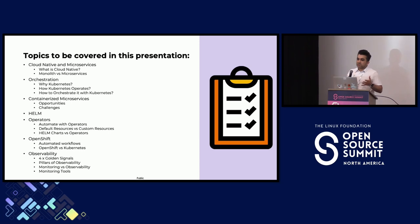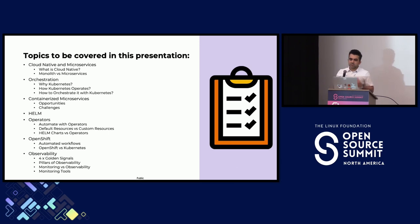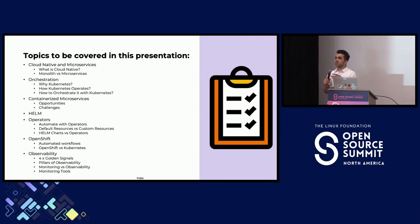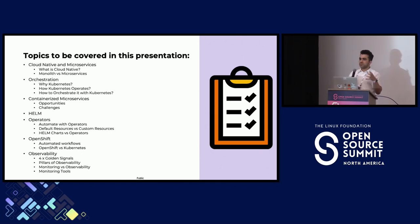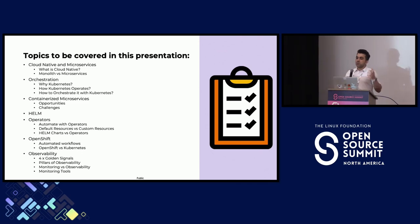First, we're going to start with cloud-native and microservices. Then we go into the orchestration phase, a little bit on containerized microservices and what challenges we're going to face. A little bit on Helm. Operators are going to be next — I'll offer operators as an alternative to Helm charts and how that helps engineers become more innovative and use their time to code and be creative rather than just focus on putting configurations into their clusters. Then OpenShift as an alternative to bare-metal Kubernetes, and finally observability.